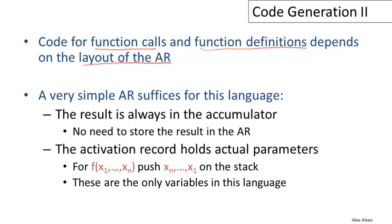For this particular language, a very simple activation record will be sufficient. Because we're using a stack machine, the results of a function call will always be in the accumulator, and that means there's no need to store the results of the function call in the activation record. Furthermore, the activation record will hold the actual parameters. These are the only variables in this language — there are no local or global variables other than the arguments to a function call, so those are the only variables that will need to be stored in the activation record.